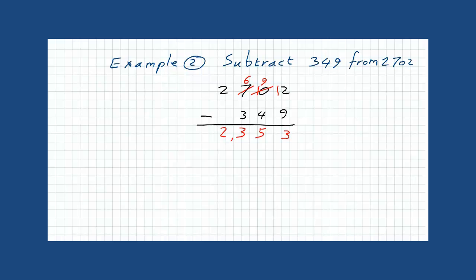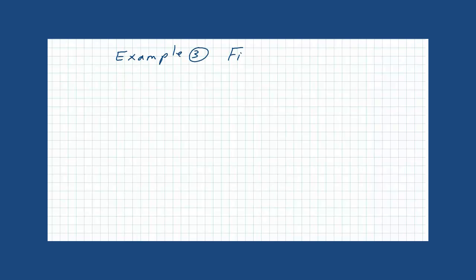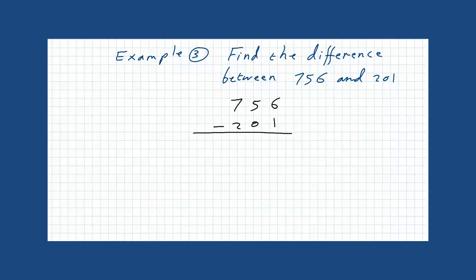Example 3: find the difference between 756 and 201. This means that we must subtract these numbers. So it is 756 minus 201. 6 minus 1 is 5. 5 minus 0 is 5. And 7 minus 2 is 5. And so our answer is 555.